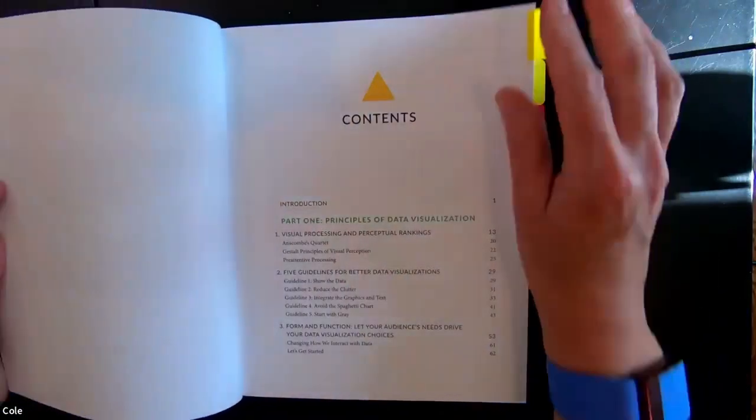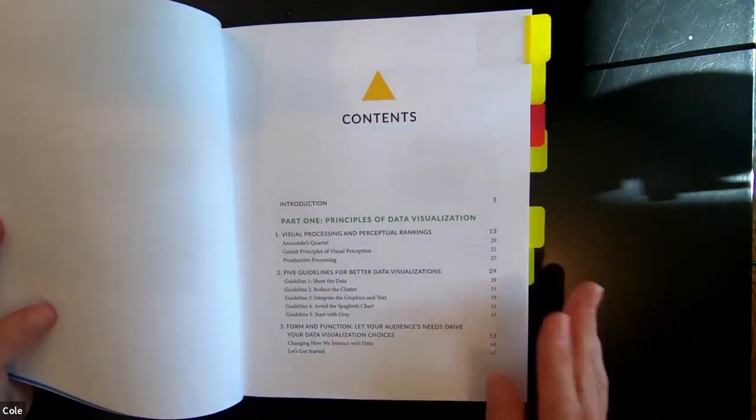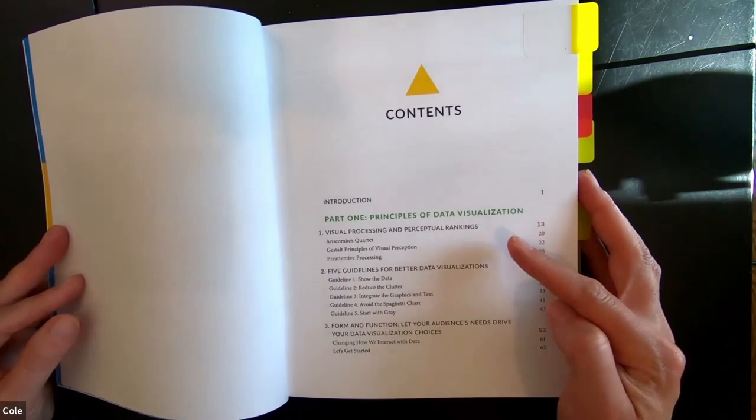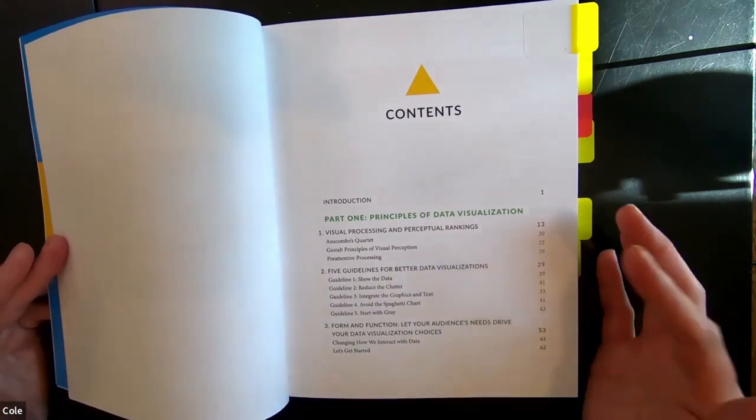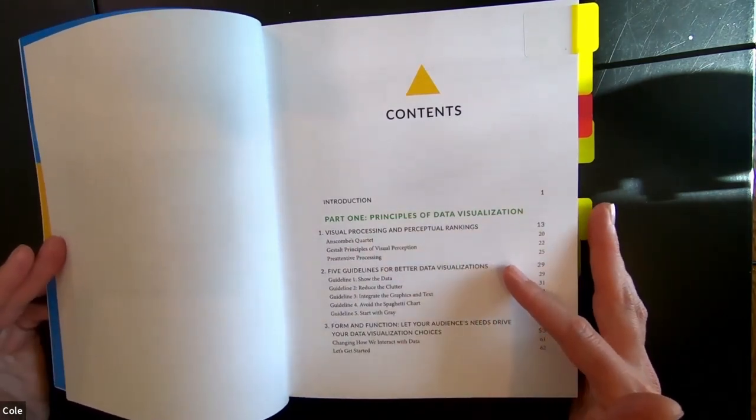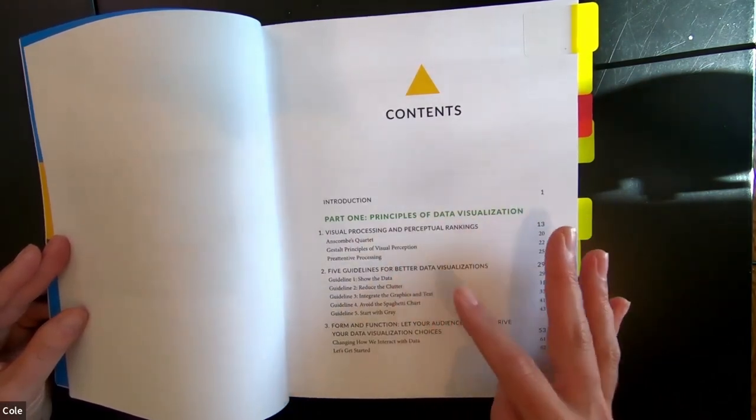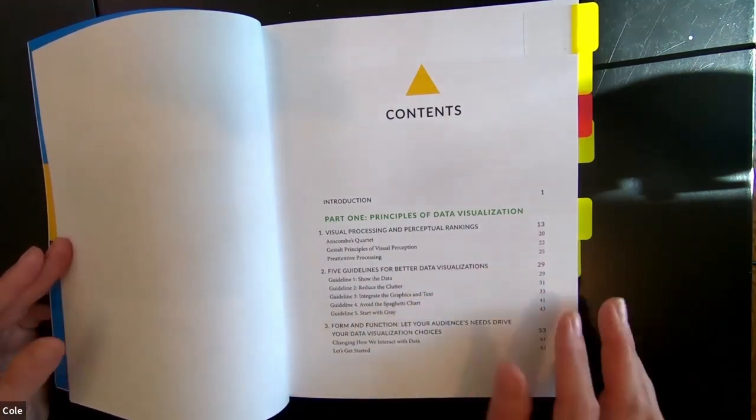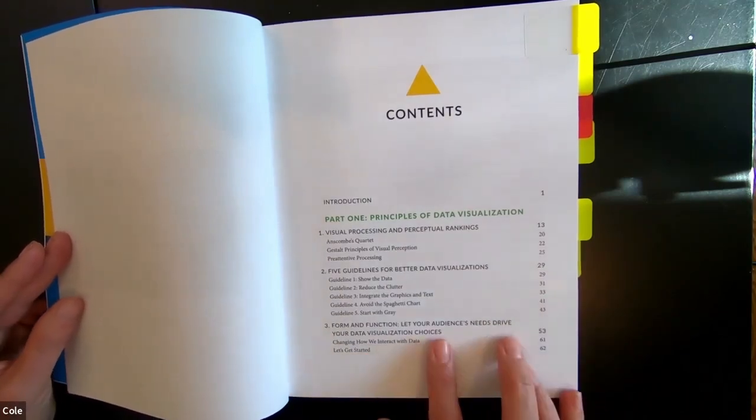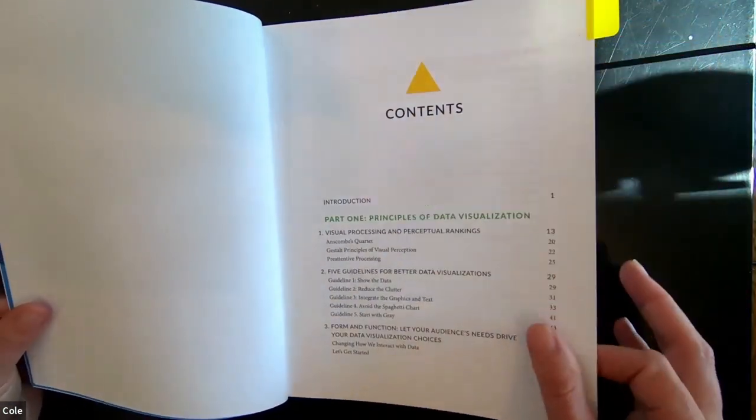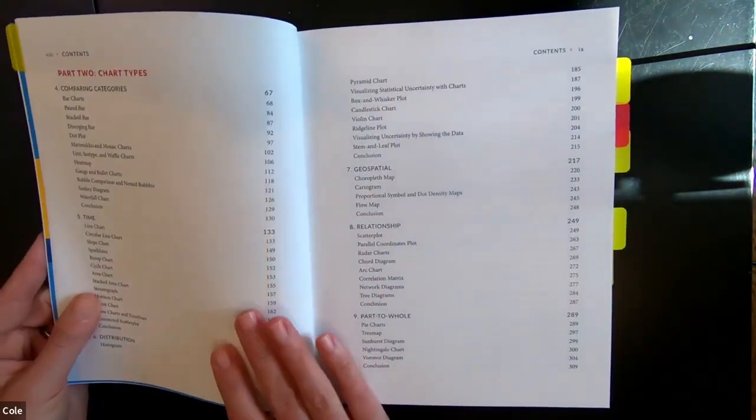Let's take a look inside. So let's start at the front table of contents. The book's organized into three primary sections. It starts off with part one, the principles of data visualization. There's a lot of content that's common to books on data visualization - visual processing, perceptual ranking. John shares his five guidelines for better data visualizations: show the data, reduce the clutter, integrate graphics and text, avoid the spaghetti chart, and start with gray. Pragmatic advice there. There's a chapter on form and function, audience's needs, incorporating those into our design choices.